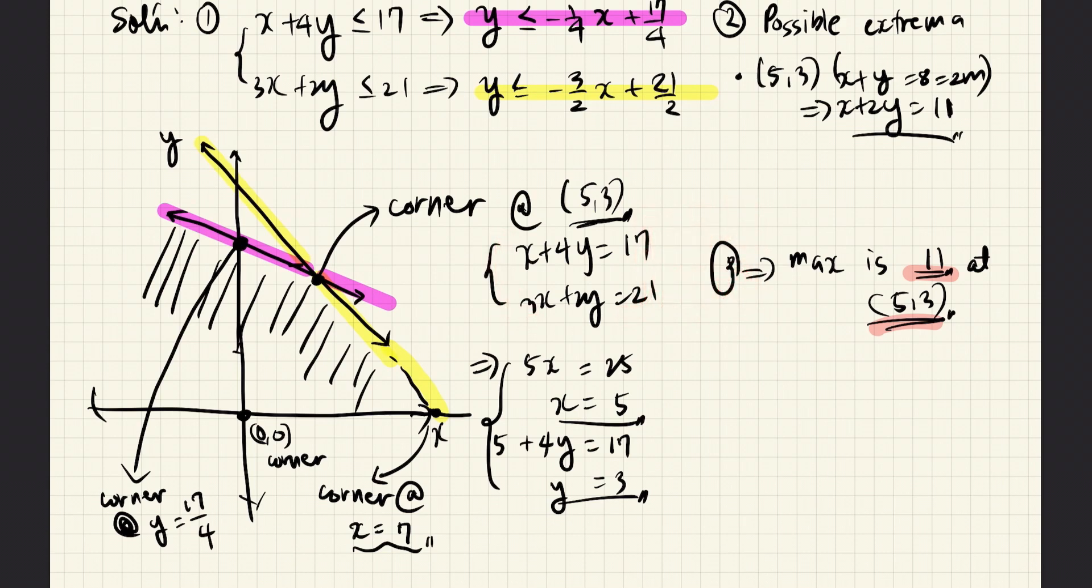When we do that we eliminate Y and we are left with this equation which gives us the value for X. Now we can replace X equals 5 into the first equation here and we obtain this equation which we can now solve for Y. That gives us Y equals 3. That means that this corner here has the coordinates 5, 3.